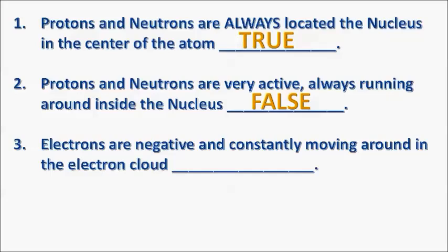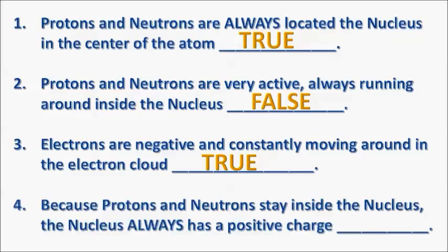Number three, electrons are negative and constantly moving around in the electron cloud. True. And the last one, because protons and neutrons stay inside the nucleus, the nucleus always has a positive charge. This is also very true.